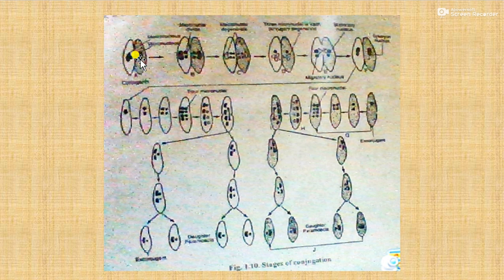In conjugation, two paramecia, also referred to as preconjugants of opposite mating types, unite at their oral grooves. They stop feeding and their oral apparatus disappears. The pellicle and ectoplasm at the point of contact degenerate, and a protoplasmic bridge forms between the two individuals.